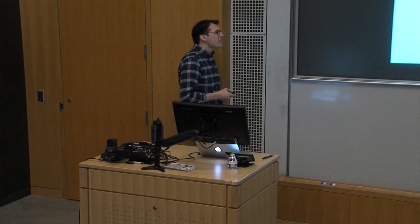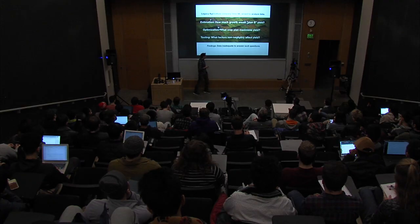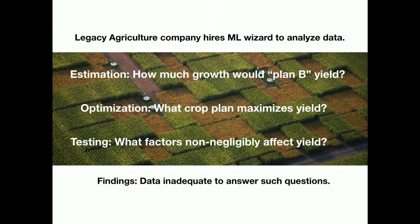More often than not, the ML engineer will crunch on the data, apply state-of-the-art models — LSTMs, deep learning, etc. — and if they're a good statistician, they'll come up with a final answer of: your data is inadequate. You don't have the right data, you don't have enough of the right data to answer these questions, even if these legacy firms have decades of data. They think they have lots of data, but they have the wrong data.